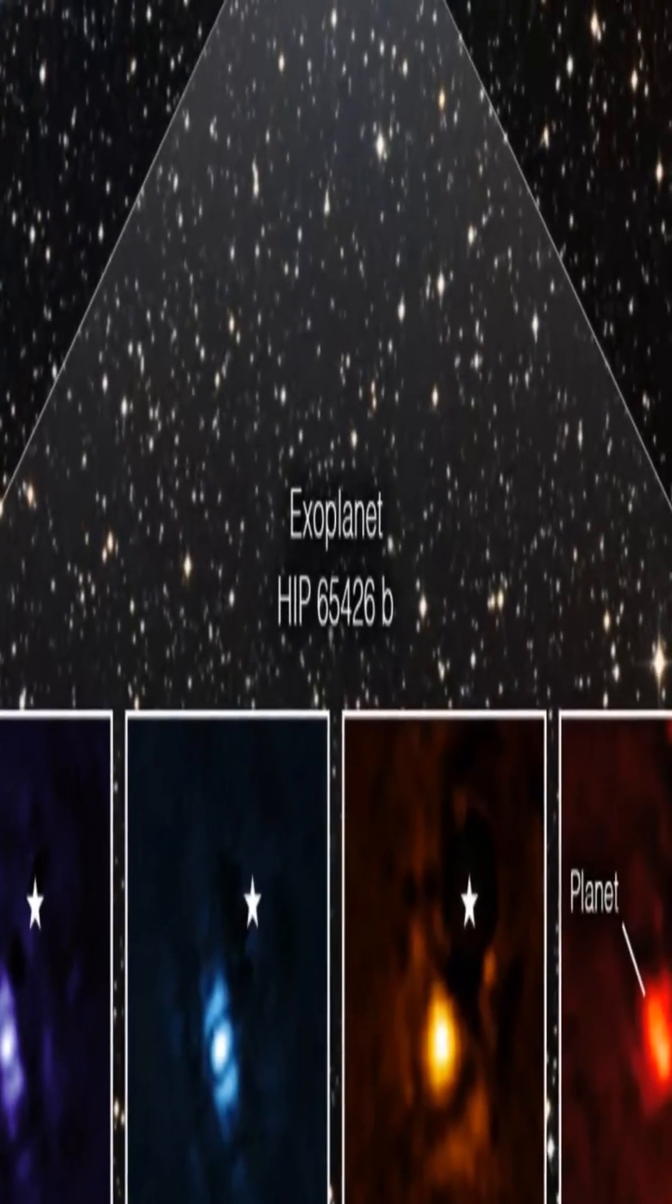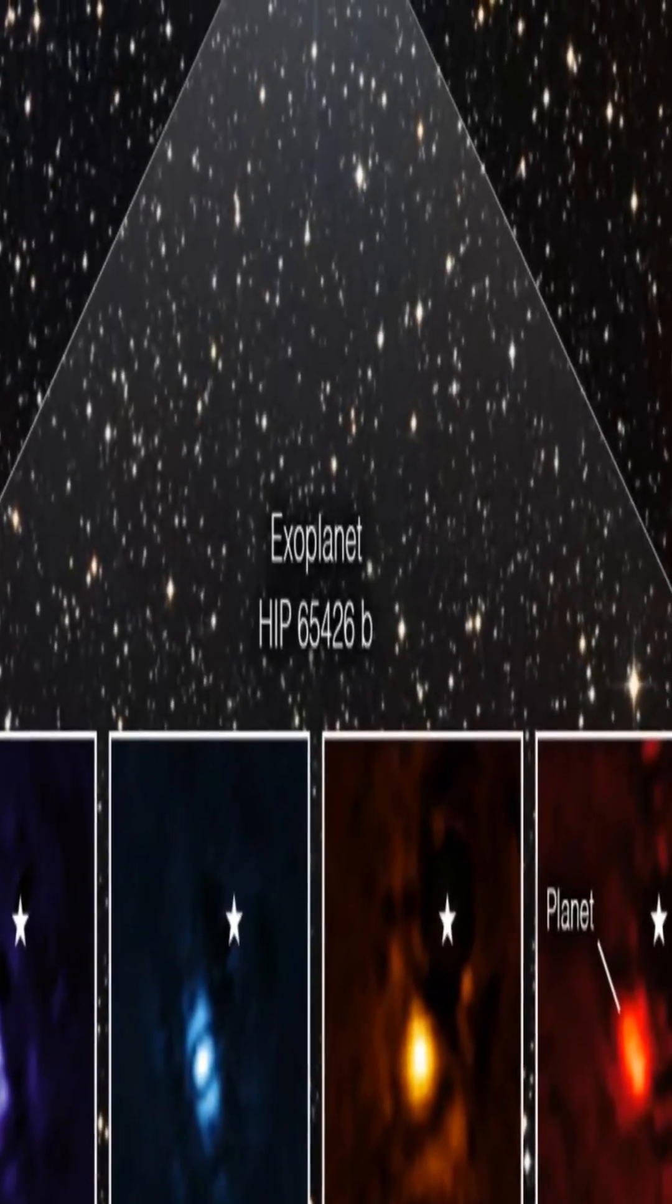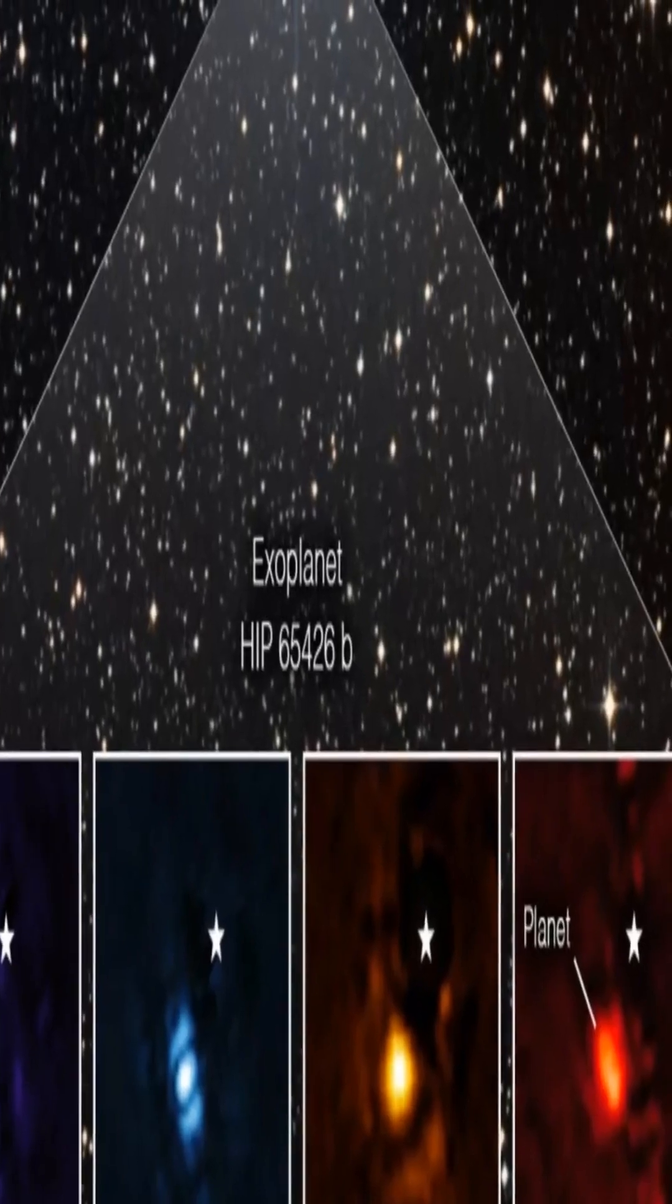Because exoplanets are so much fainter than the stars they orbit, it is very challenging to directly observe them.